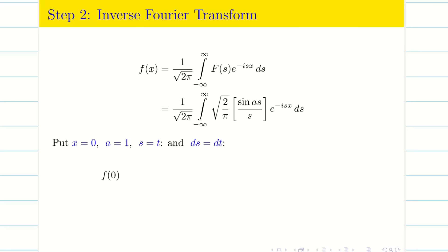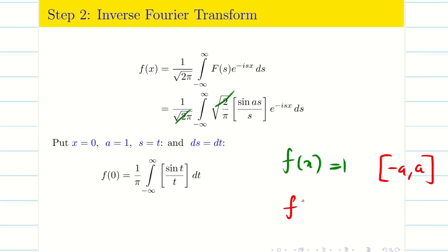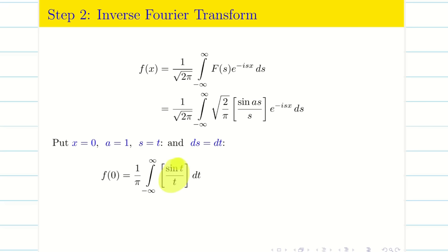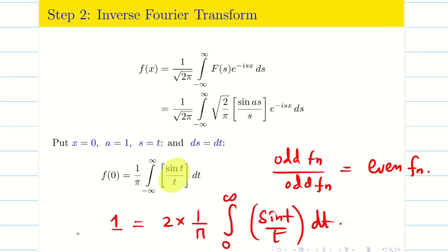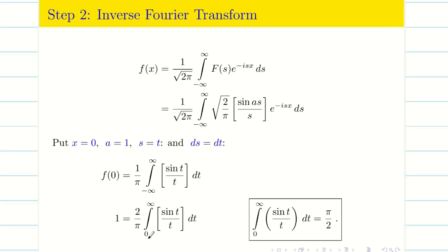After substitution and cancelling √2 with √2, and √π × √π = π, we get: f(0) = (1/π) × integral from −∞ to ∞ of sin(t)/t dt. Since f(0) = 1, and sin(t)/t is an even function (odd over odd), we apply the even-function property: 1 = (2/π) × integral from 0 to ∞ of sin(t)/t dt. Therefore, ∫₀^∞ sin(t)/t dt = π/2. First deduction proved.